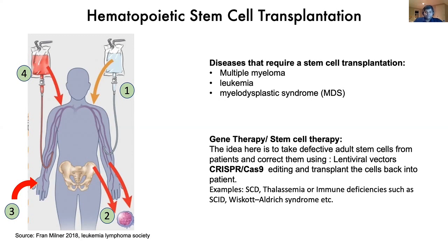Hematopoietic stem cells can also be used to correct genetic defects such as sickle cell disease, thalassemia, other immunodeficiencies, or severe combined immune deficiency. Deficiencies in isolated stem cells can be corrected and those stem cells returned to the patient. This correction can be achieved by lentiviral vectors or CRISPR-Cas9 editing, bringing many new therapeutic capabilities for patients.